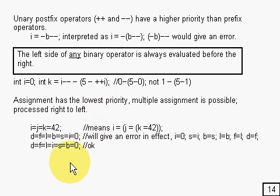Right, assignment. You can look upon that as an operator as well, that equals sign, and you can in fact do multiple assignments. So for example, you could have something like that, i equals j equals k equals 42, and that would set the whole lot to being 42.